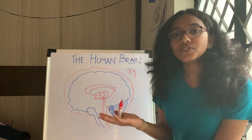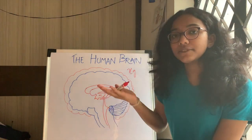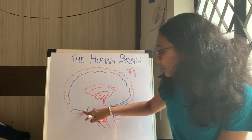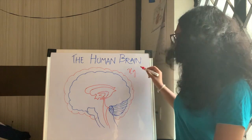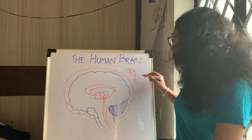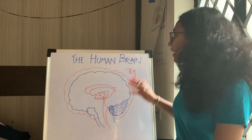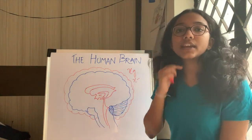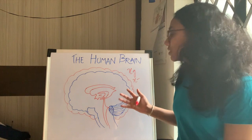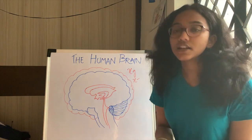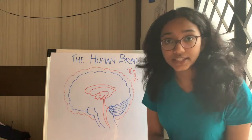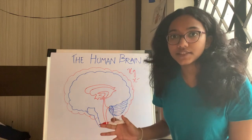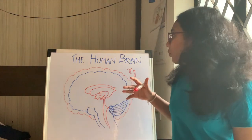What this fluid does is — suppose the net weight of the brain is X grams — because of the buoyancy force given by this cerebrospinal fluid, the net weight of the brain becomes X minus whatever weight is reduced by the fluid. So the amount of pressure the brain exerts in the body becomes way less. This is buoyancy.